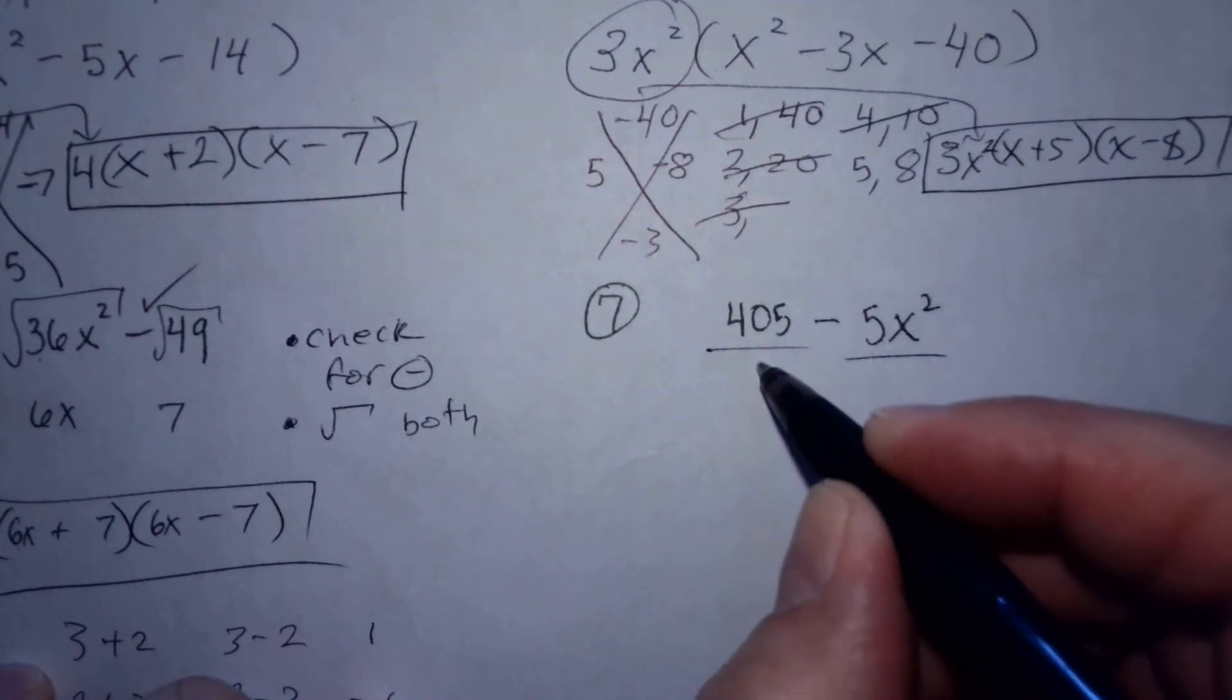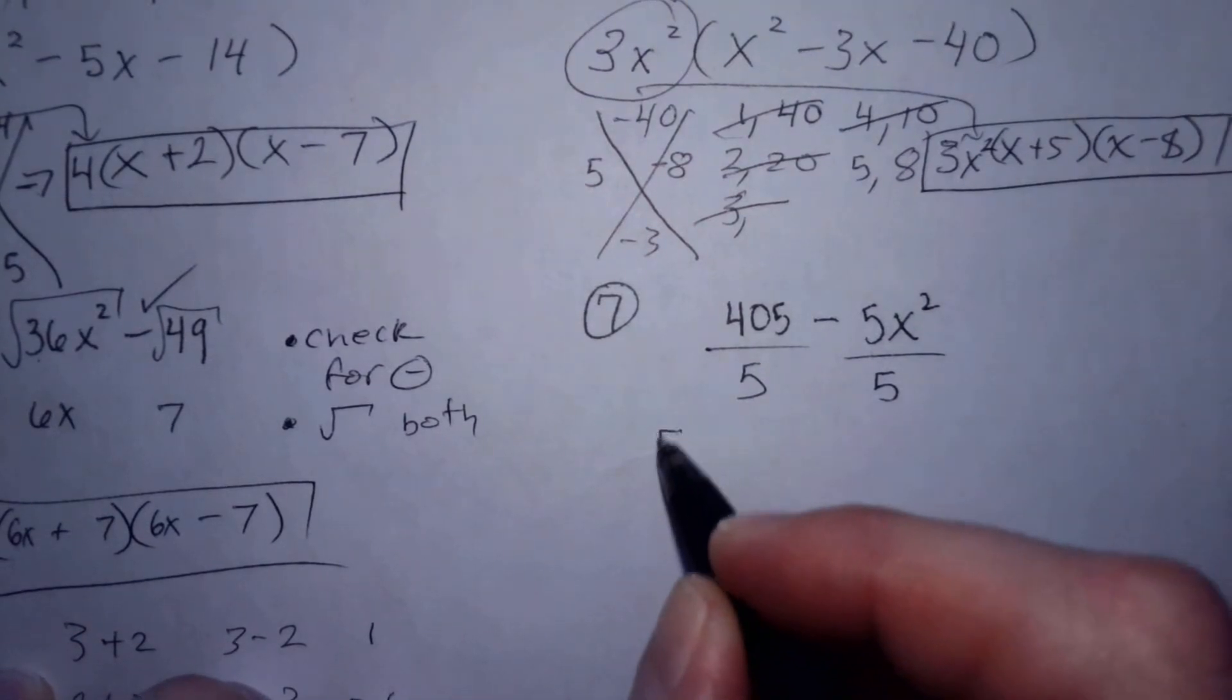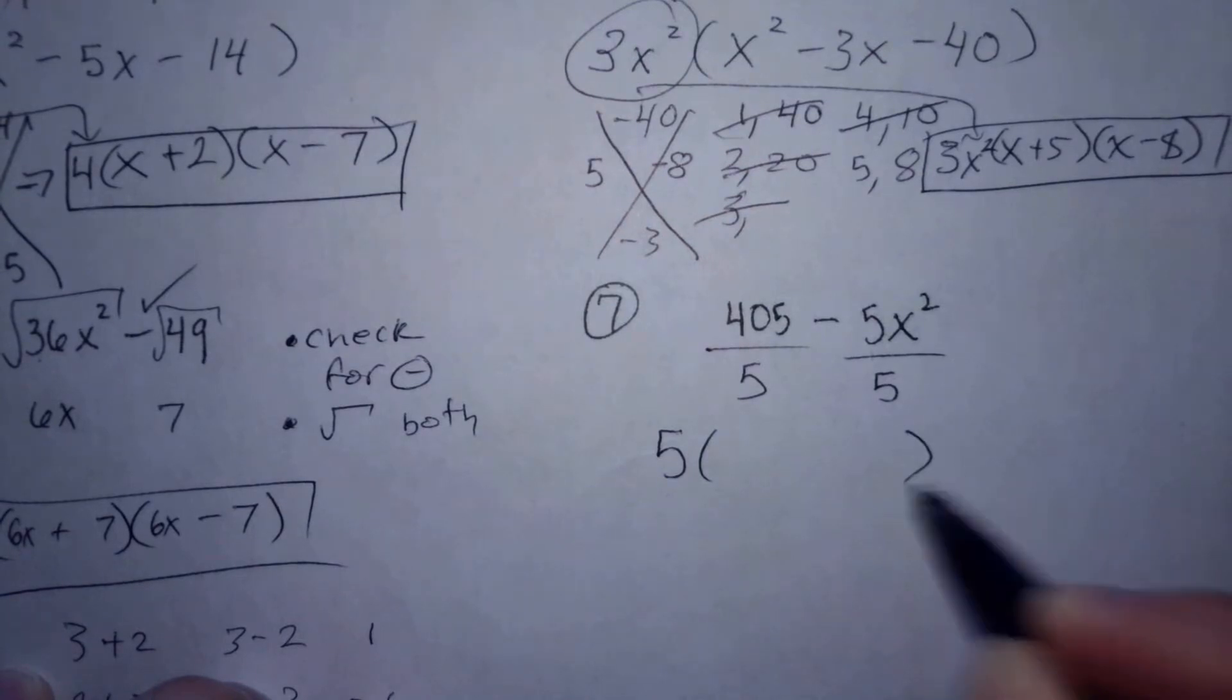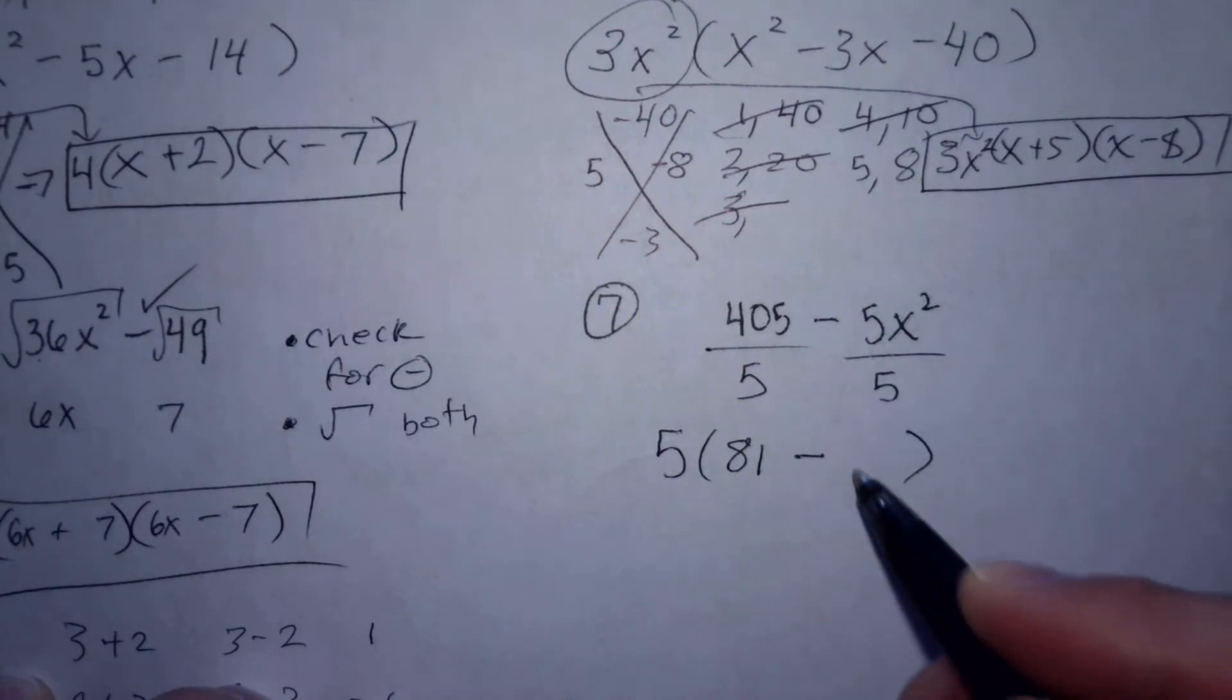I can't divide by any variables, but the same thing that I've been saying: whatever you divide by goes on the outside of parentheses. 405 divided by five is 81, and we have the minus and then x squared.